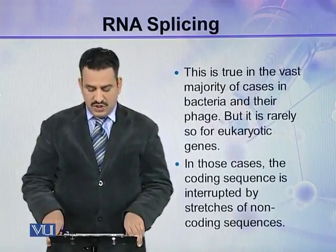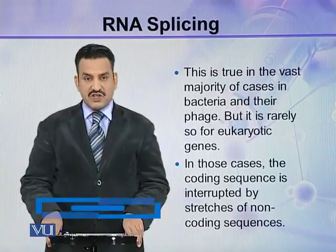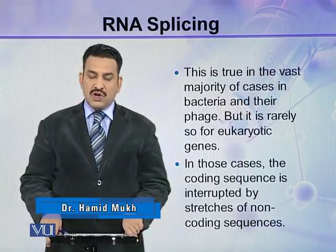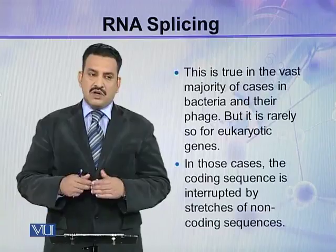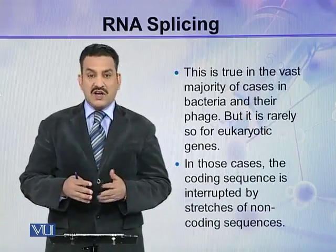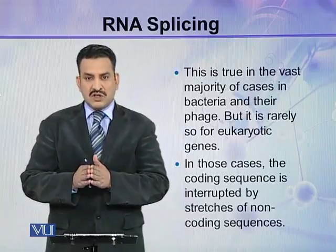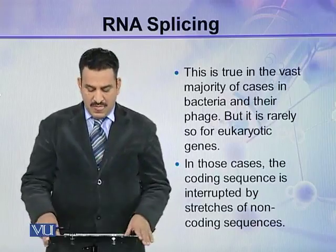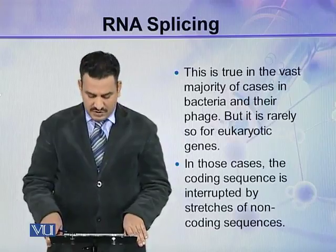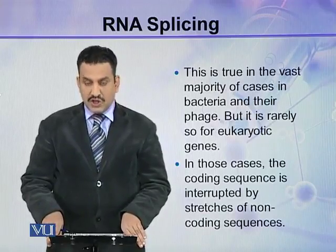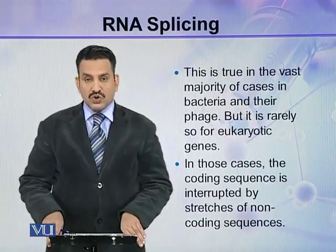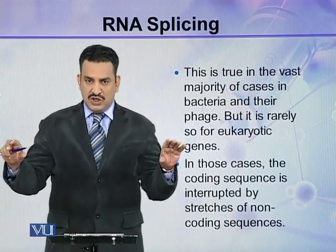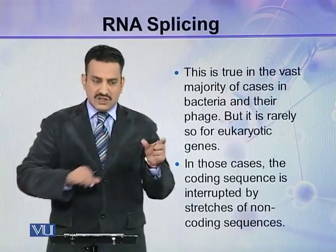This is true in the vast majority of cases in bacteria and their phages, but it is rarely so for eukaryotic genes. In prokaryotic organisms such as bacteria and phages, the sequence is contiguous — all the codons are adjacent to each other. But in eukaryotes it is different. In those cases, the coding sequence is interrupted by stretches of non-coding sequences.